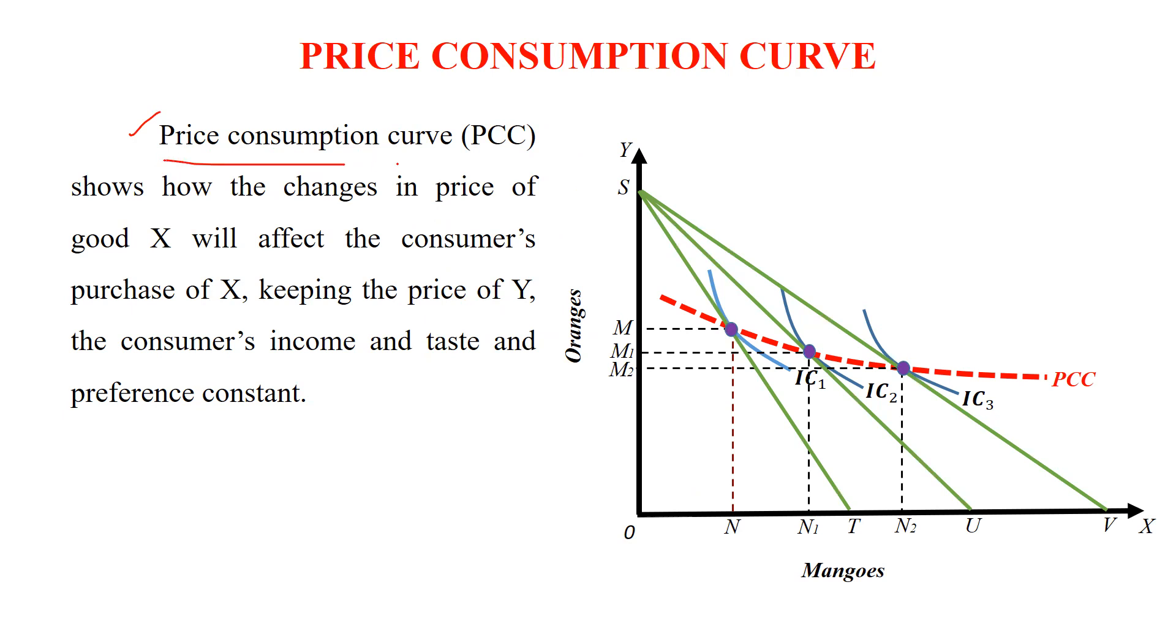Price consumption curve PCC shows how the changes in the price of good X will affect the consumer's purchase of X, keeping the price of Y, the consumer's income, and taste and preference constant. So we are talking about other commodity's price is constant. Customer's income, taste and preference, everything is constant.